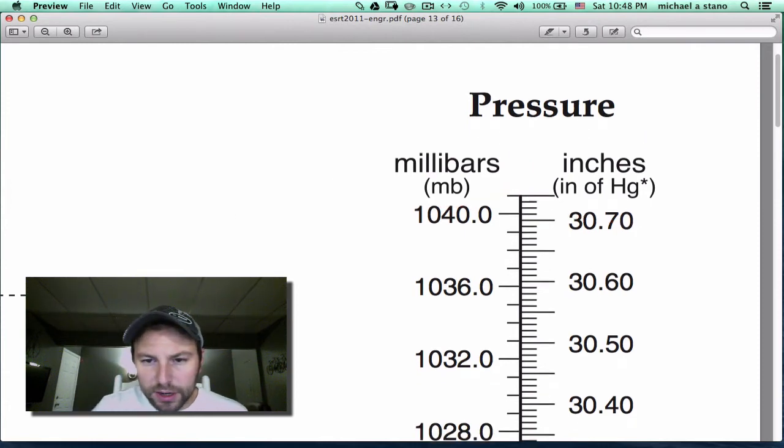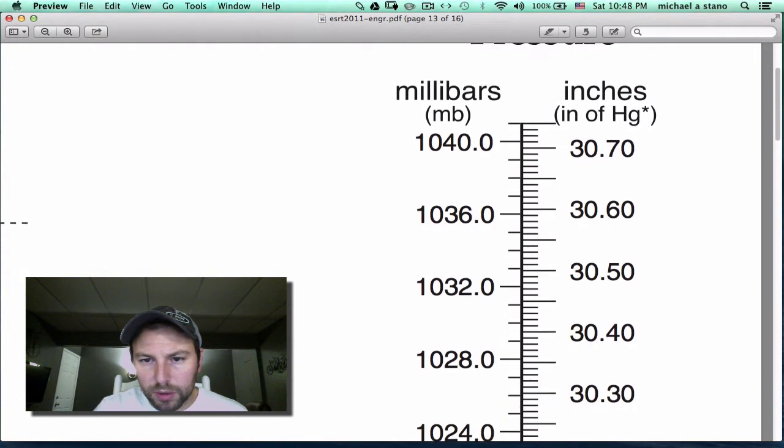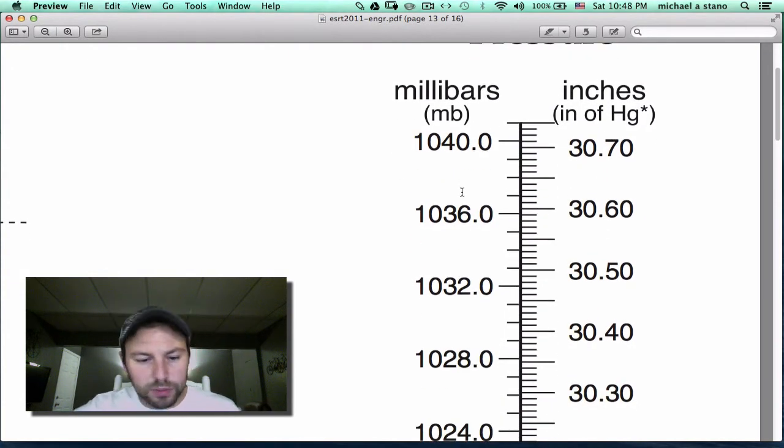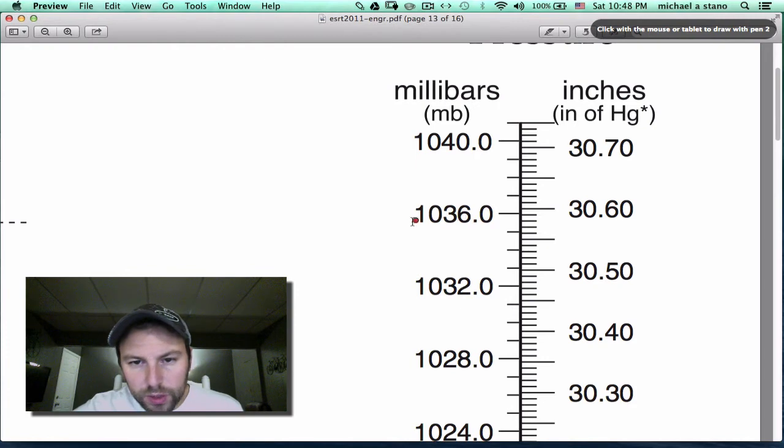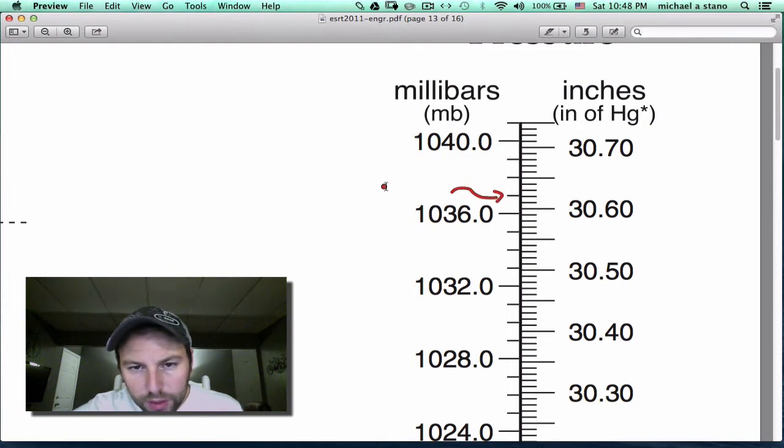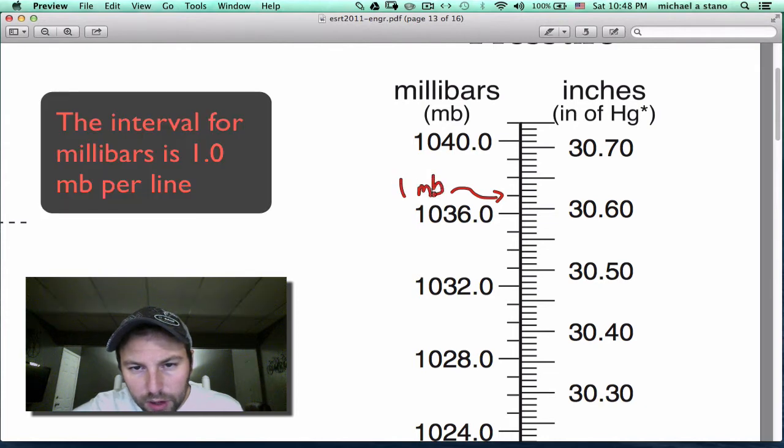If we look on the left side here where it says millibars, we can see how this is broken up. So we go from 1036 to 1040 and we can see we have one, two, three, four lines in between, making each one of these worth one millibar. And you could write this on your reference table if you like.